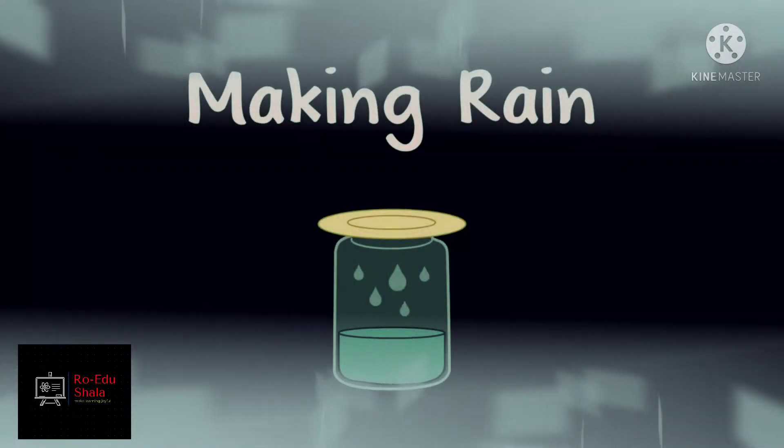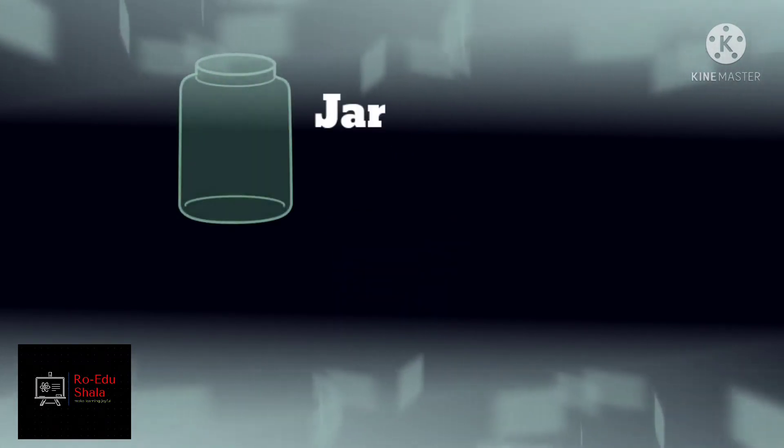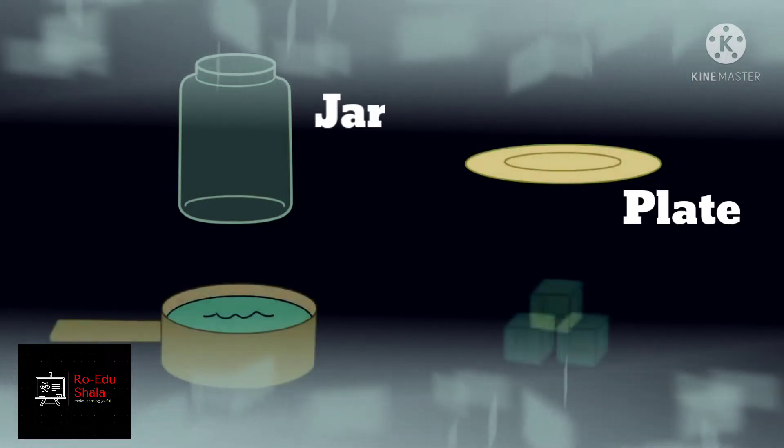You can help a child learn about weather by making rain in a jar. You will need a glass jar, a plate, water, and ice.